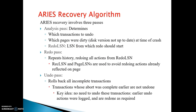ARIES recovery involves three important phases. One: analysis phase. Two: redo pass. Three: undo pass. In each pass, certain tasks are performed. In the analysis pass, we determine which transactions to undo, which pages were dirty at the time of crash, and the redo LSN — the point from which redo should start.